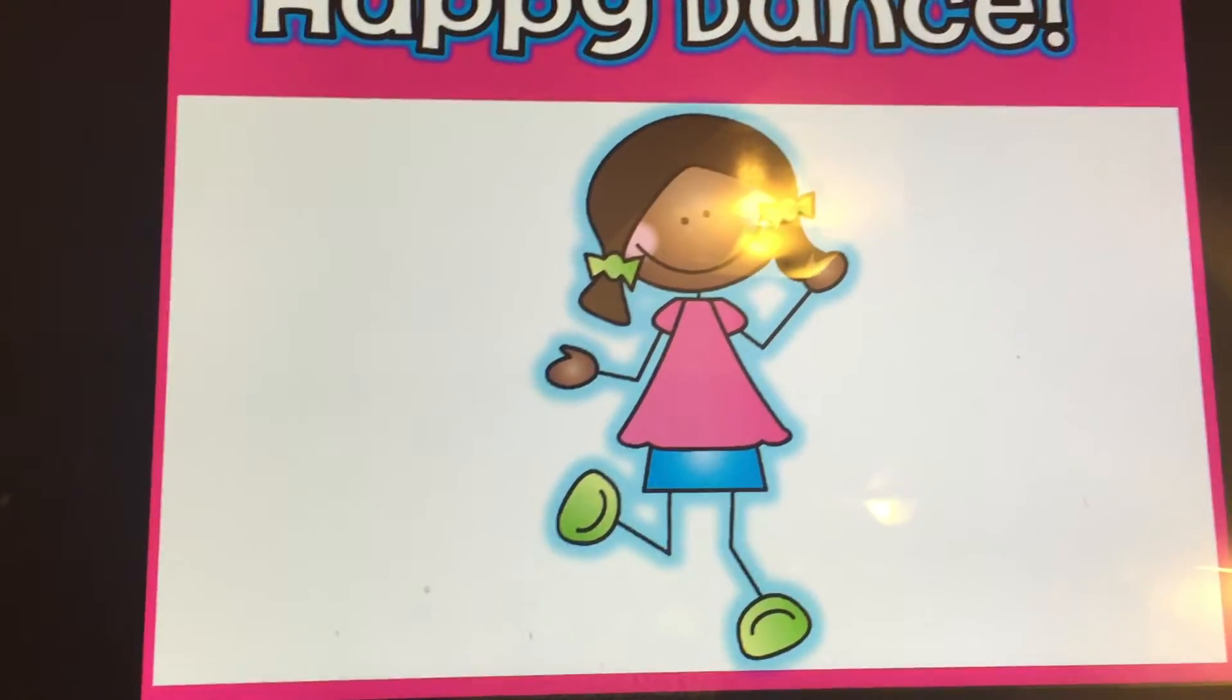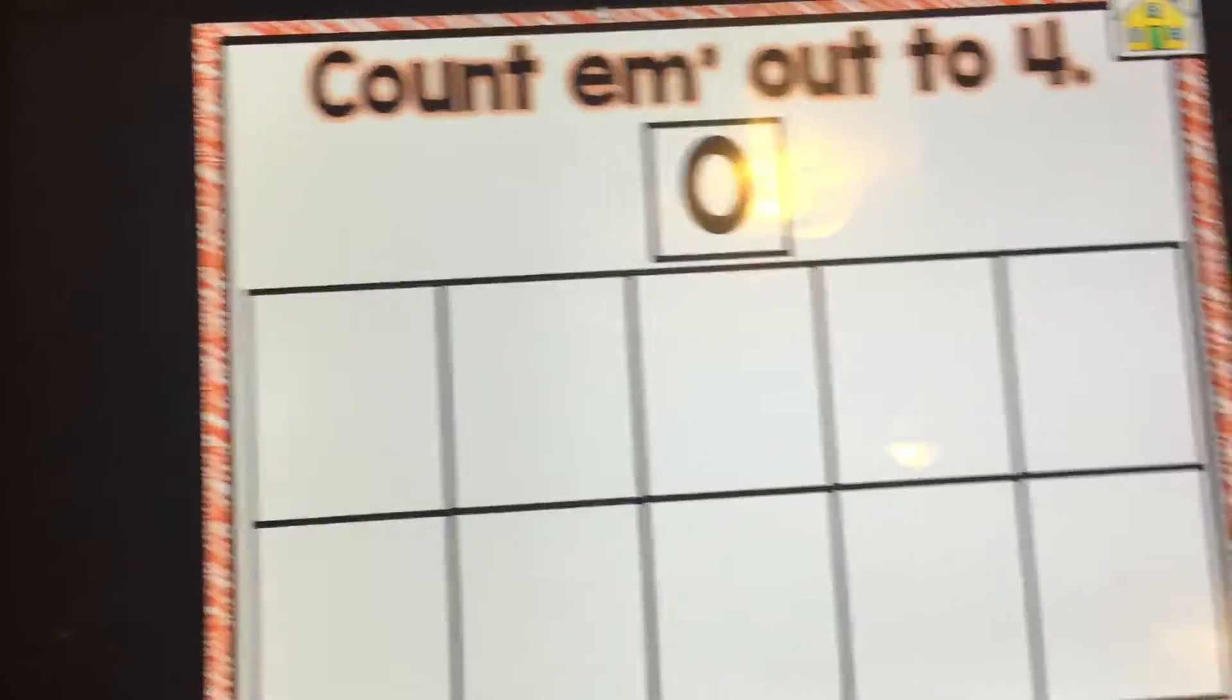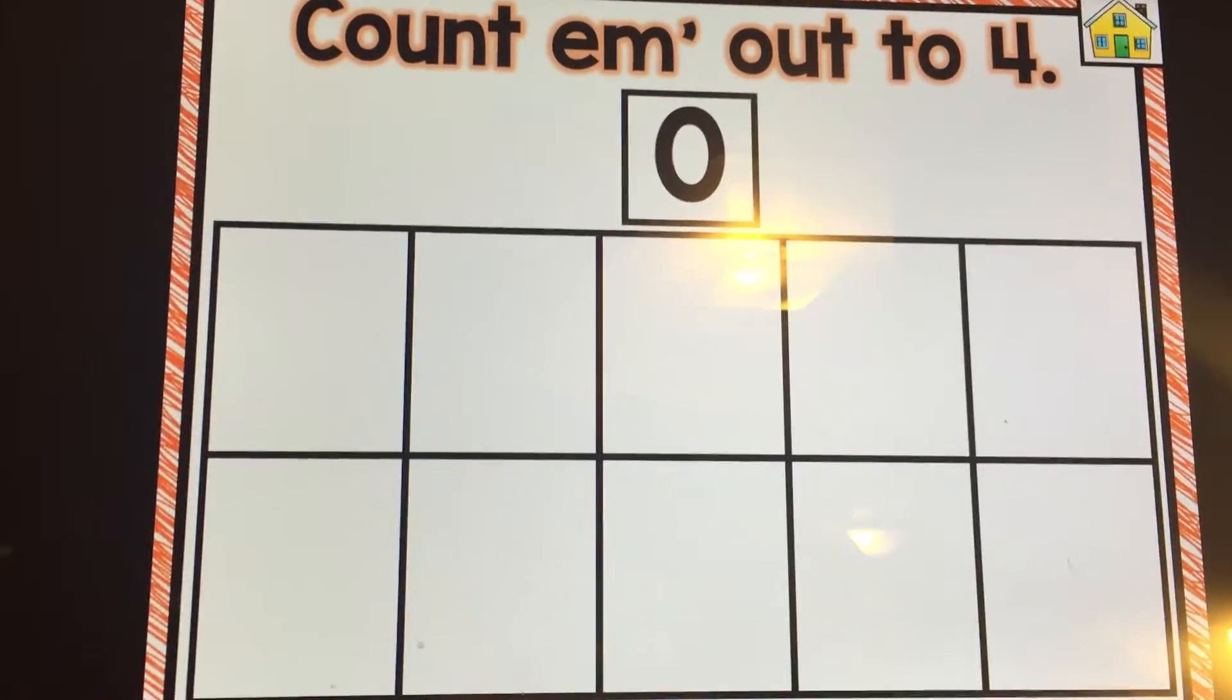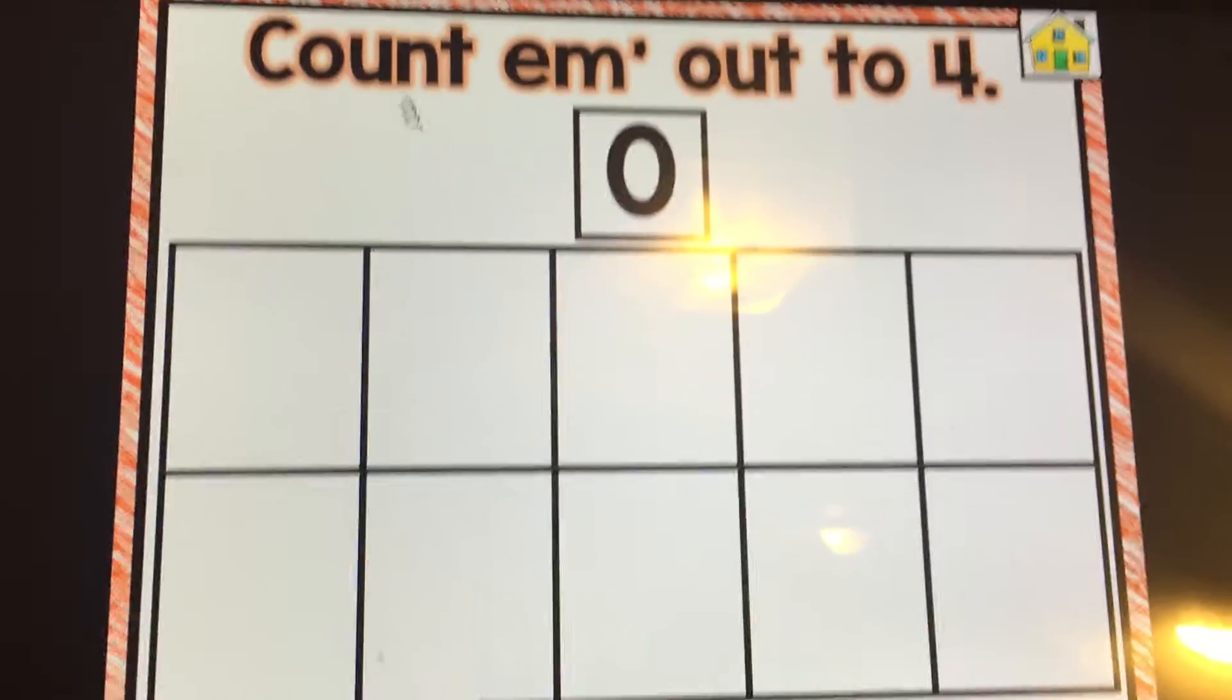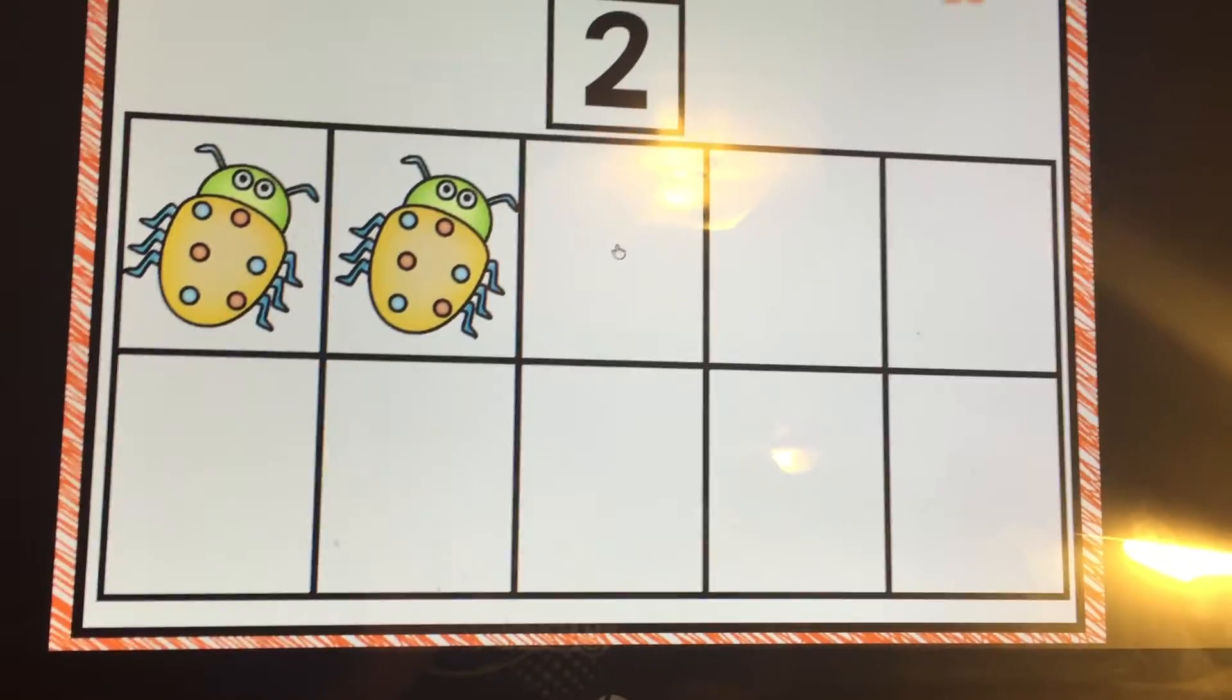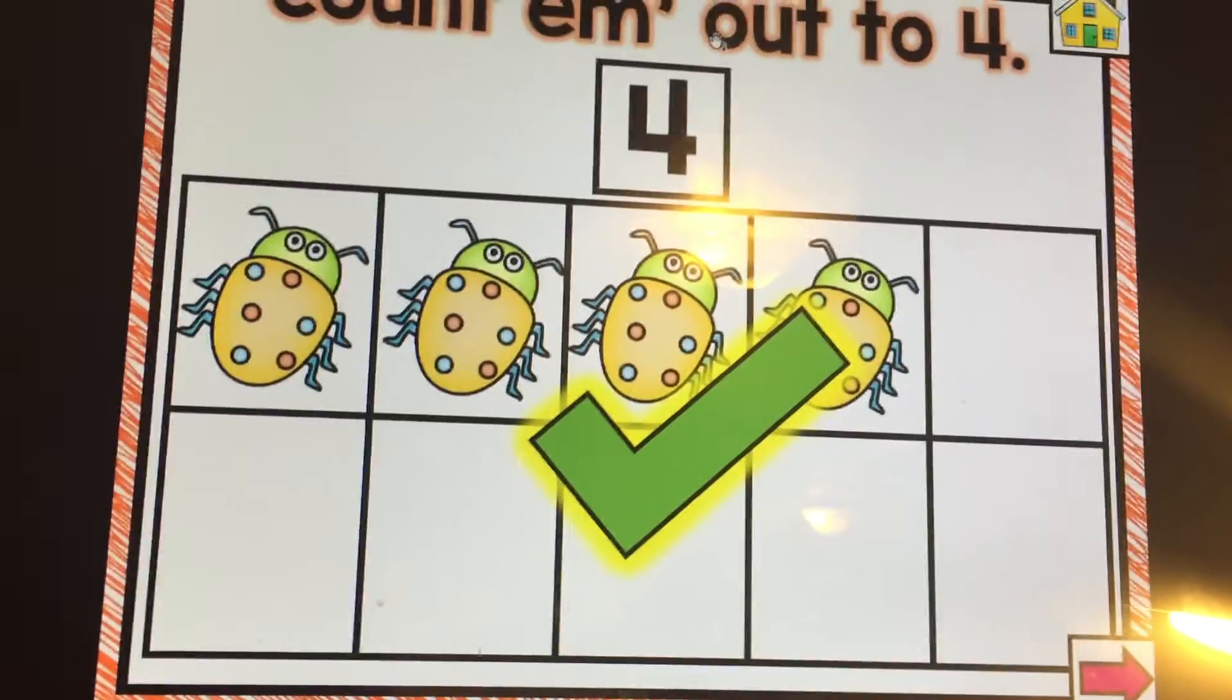Happy dance. Okay, count them out. This skill is all about one to one correspondence and it helps with number ID too. When they see the quantities, the numbers up here in the little box. Right now we have zero. So let's count them out to four. Zero, one. And they just click on the spaces. Two, three, four. And when they get to the correct number, it will automatically come up as a check mark.